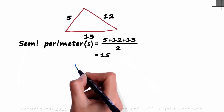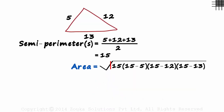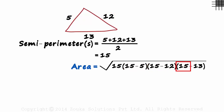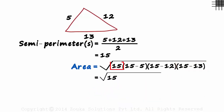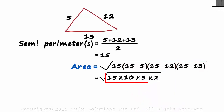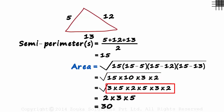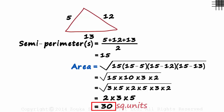So what will be the area? It will be the square root of 15 times (15 minus 5) times (15 minus 12) times (15 minus 13) — that is, the square root of 15 times 10 times 3 times 2. Writing this in terms of its prime factors and solving further, we get the area as 30 square units.